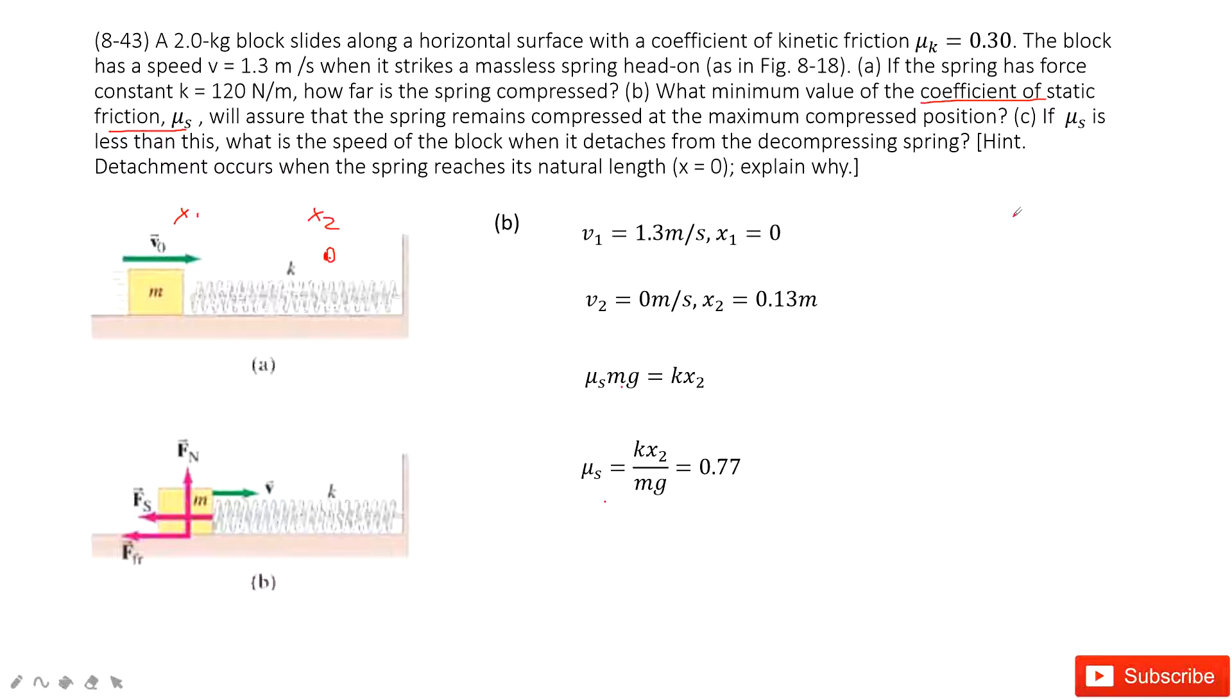The third one asks you, if this μs is less than that, that means the friction force cannot hold the box stationary at x2. And then, what is the speed of this box when it detaches from the decompressing spring? That means at there, it couldn't be 0. So the box will come back, moves this way.